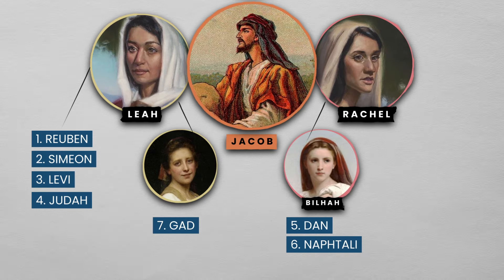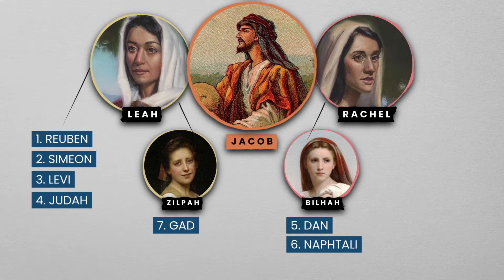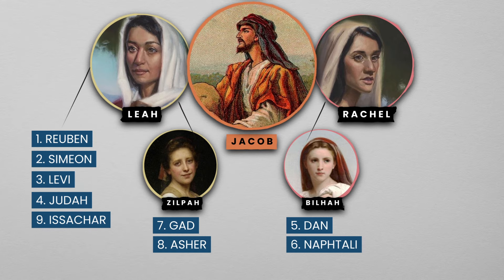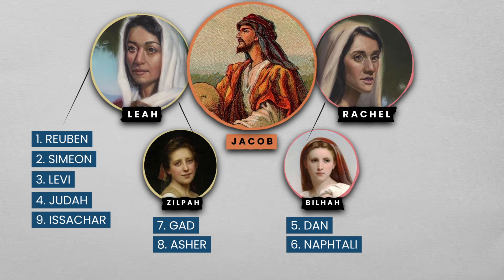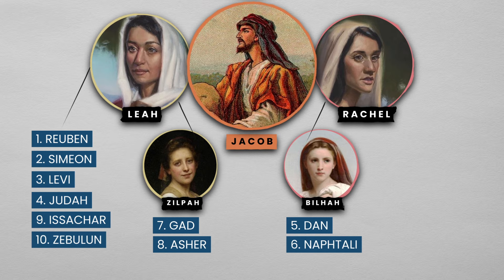Gad was number seven. He was the child of Jacob and Zilpah, the handmaid of Leah. Asher was next — he was the second of Zilpah. Issachar was another son granted to Leah. Zebulun was the next child, Leah's sixth.